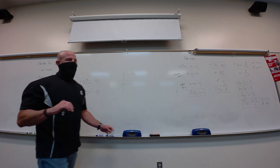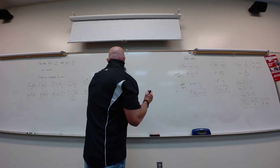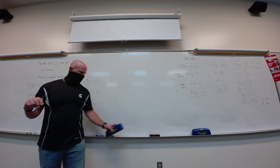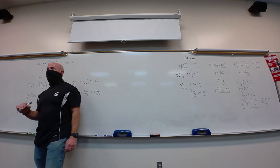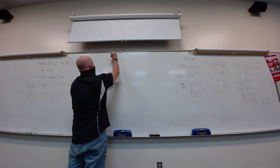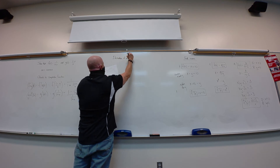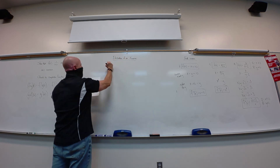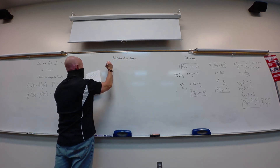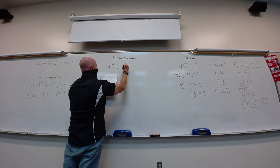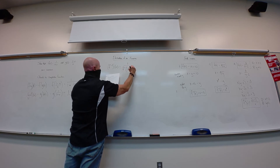Our second brand new piece today — after monotonic — is the derivative of an inverse. The formula is: f inverse prime of x equals 1 over f prime of f inverse of x.